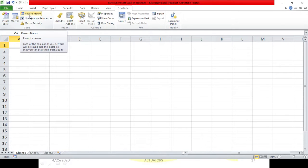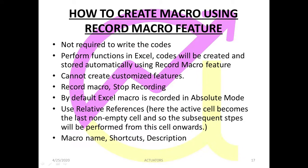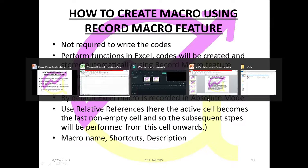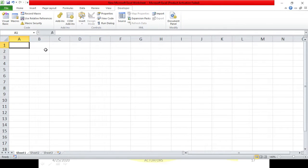By default, when you record a macro in Excel, it gets recorded in absolute terms - in the absolute mode. We will cover what absolute mode and relative mode mean. If you have done Excel, you might know what absolute referencing and relative referencing are, and I will show you an example so that the idea gets more clear, starting with the basic record macro feature.